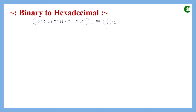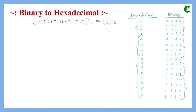Next we convert from binary to hexadecimal. The hexadecimal number system has 16 digits from 0 to 15, where digits 10 through 15 are mapped to letters A through F. Since 16 equals 2 to the power of 4, representing any hexadecimal digit in binary requires four bits. We will apply the same grouping technique as before, but this time using groups of four bits.